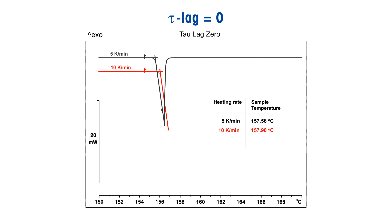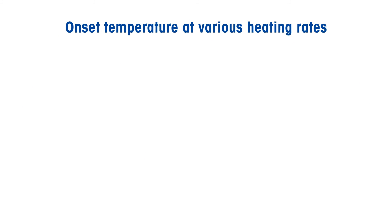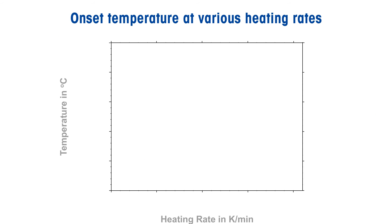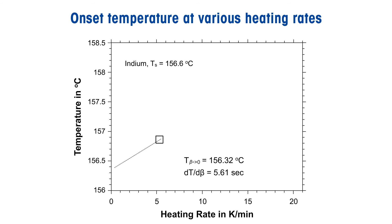DSC measurements of the same sample, for example indium, with different heating rates in an unadjusted instrument would show different melting onsets, but melting points should be heating rate independent.